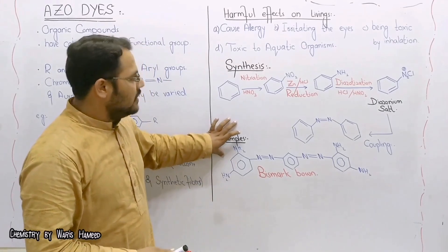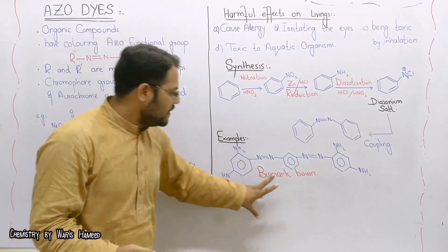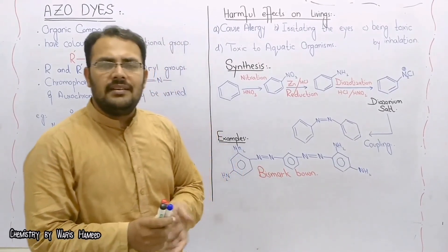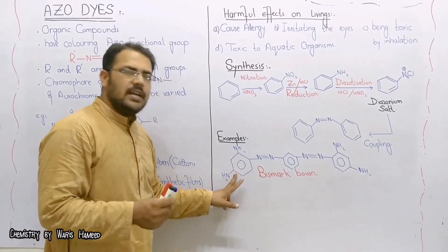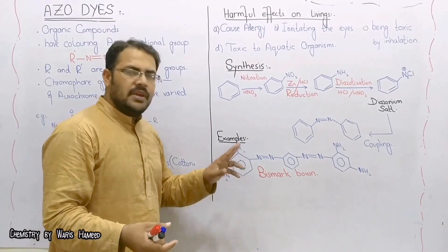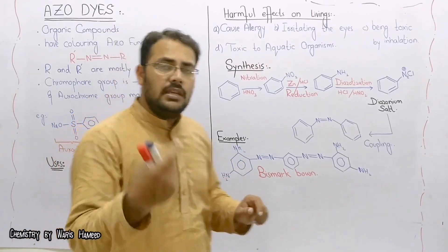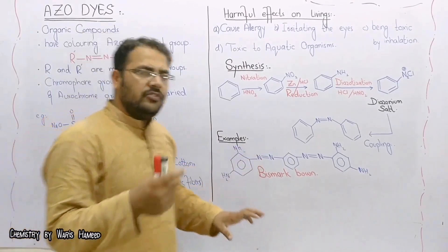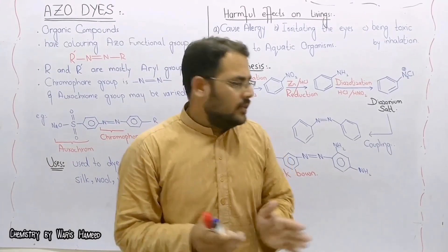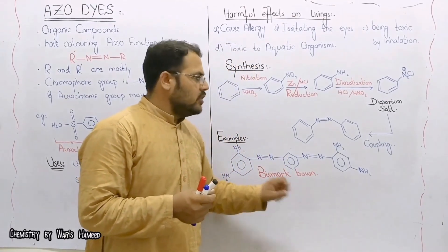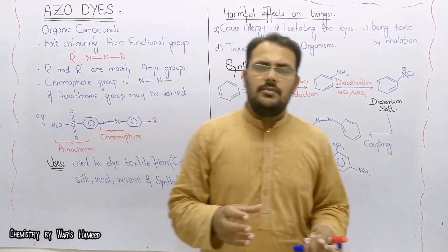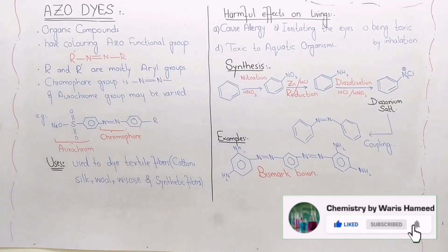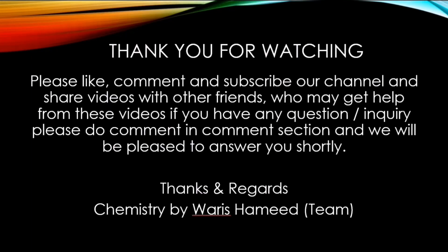Now look at the example of an azo dye. Here is bismarck brown, and the raw material used is 1,3-diaminobenzene (or 3-aminobenzene). We perform tetraazotization of 3-aminobenzene and obtain this type of azo dye. If you have any questions regarding azo dyes, you can ask. Thank you.